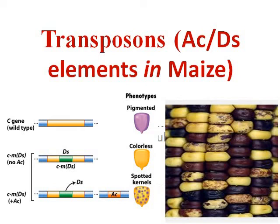Dear students, today in this lecture we are going to talk about transposons. Transposons have many types which we are going to read. AC and DS transposons, or jumping genes, which are generally found in the case of maize.